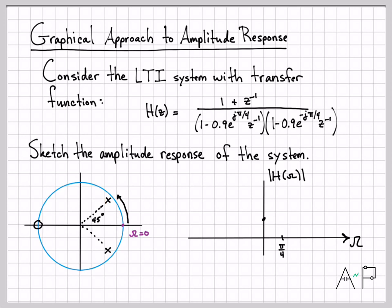One of my denominator terms is getting very small because the distance to that pole is getting very small. So as I approach that pole, what I think should happen is my denominator is getting small, so that means the overall amplitude response is increasing. So I'm going to increase up to that value right here.